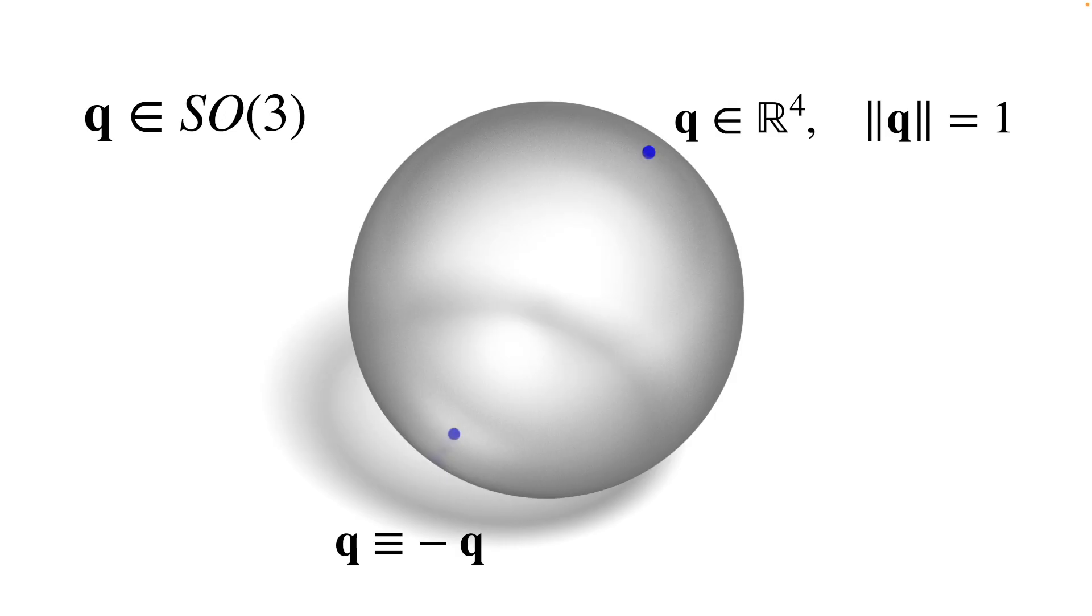For computing with orientations, it is often convenient to work with unit quaternions, meaning we can think of the orientations as samples on the unit 3-sphere.